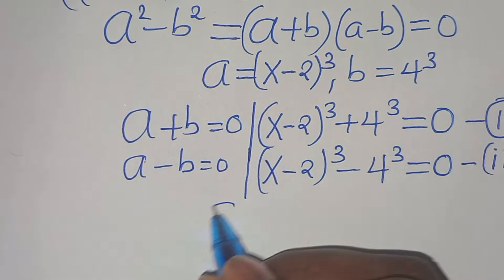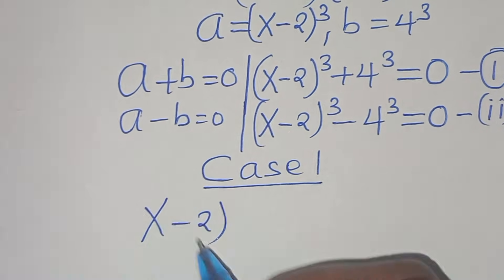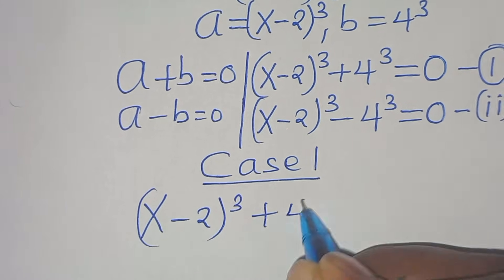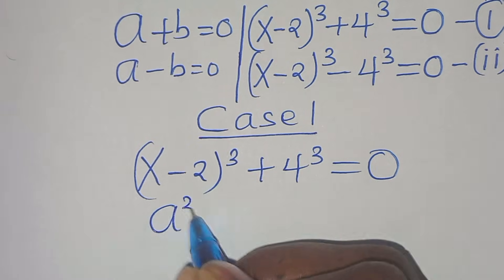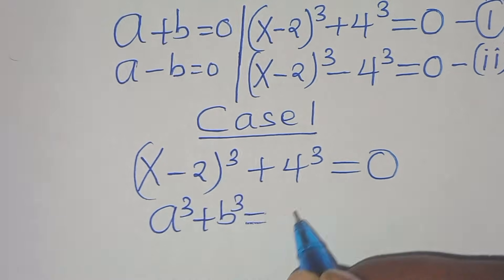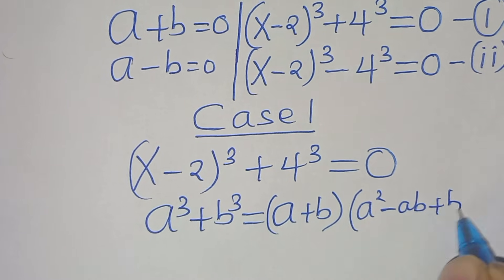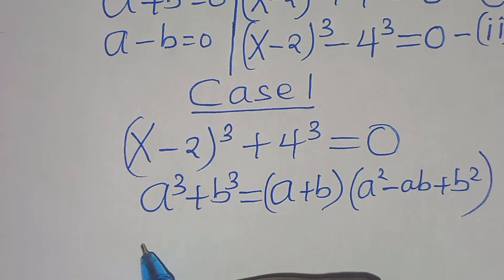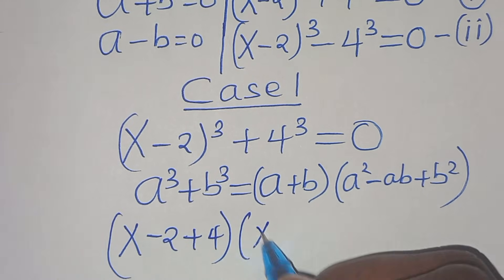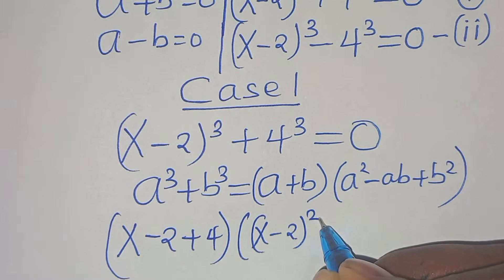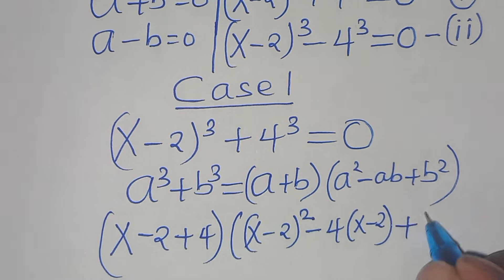Let's start with equation 1 — case 1. This implies that x minus 2 raised to the power of 3 plus 4 to the power of 3 equals 0. This equation is in the form of a to the power of 3 plus b to the power of 3, which we can express as a plus b multiplied by a squared minus ab plus b squared. Applying this identity, we have x minus 2 plus 4, then x minus 2 raised to the power of 2 subtract 4 multiplied by x minus 2, then plus 4 squared which is 16.